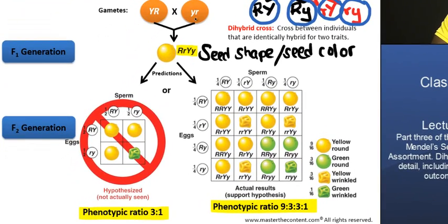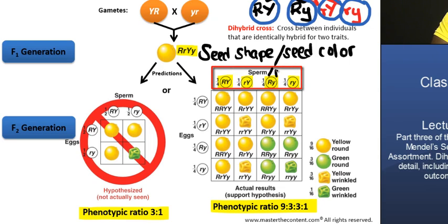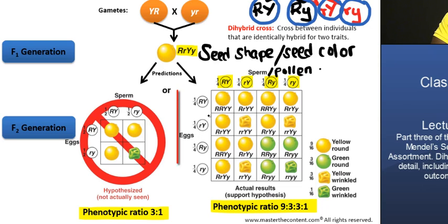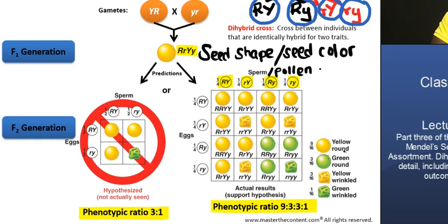Placing these gametes in a Punnett grid, we have the four genotypes: capital RY, small r capital Y, capital R small y, and small ry. We cross a male from the F1 generation — with gametes having those genotypic combinations — with a female having eggs of the same allele combinations. This produces a phenotypic ratio of 9 yellow round, 3 green round, 3 yellow wrinkled, and 1 green wrinkled — the 9 to 3 to 3 to 1 ratio.